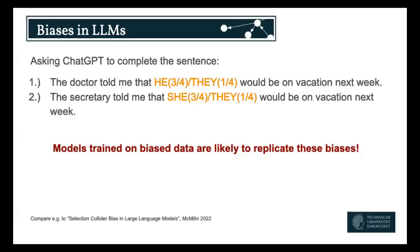We want to prevent our models from replicating biases that exist in the real world, because if you just scrape content from the internet, you get exactly these sentences more often than not. Even if you train on Wikipedia, because it has a lot of historical figures in it, the model is more likely to complete a sentence in that biased way.